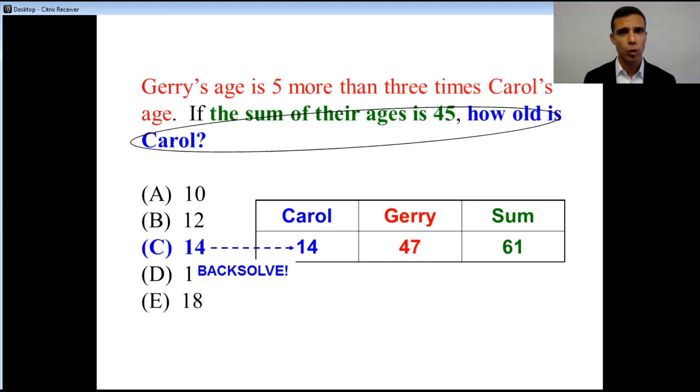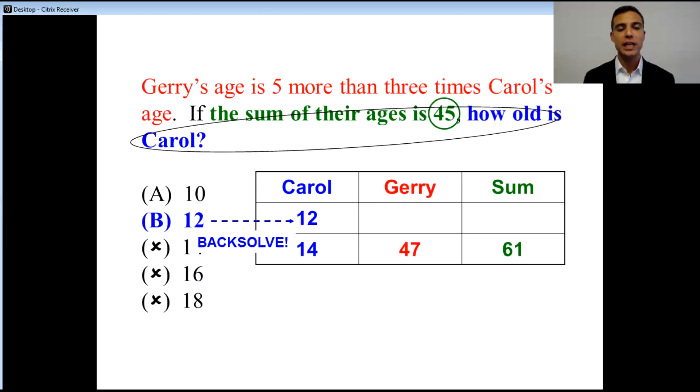If we've got a 61 but the problem wants 45, are we too high or too low? We're way too high. That means we can't choose C and we can get rid of D and E. 16 and 18 would be higher than the number we got already. So if we want a smaller number, let's try B.